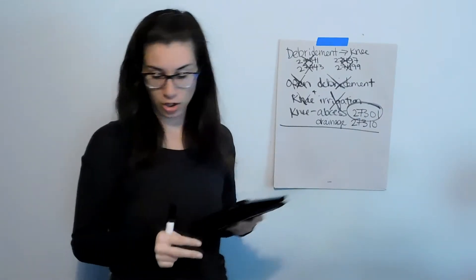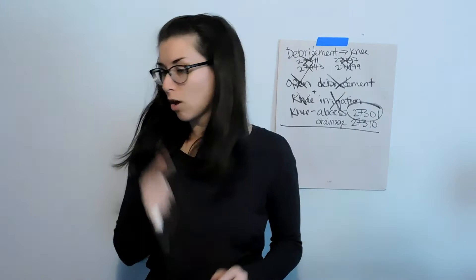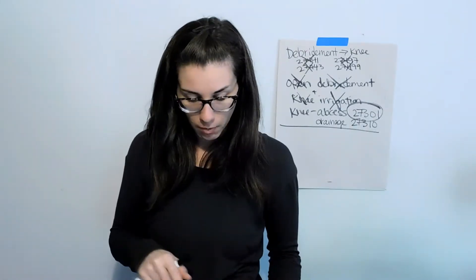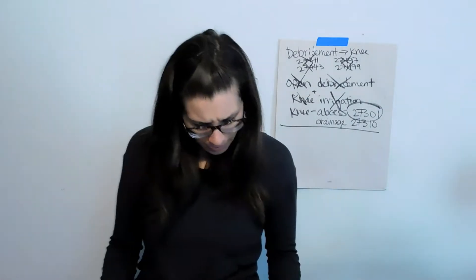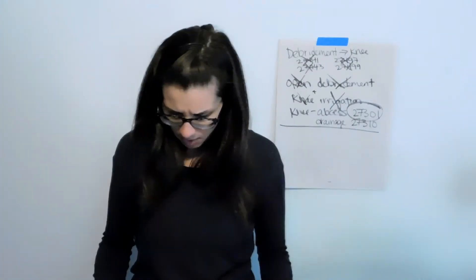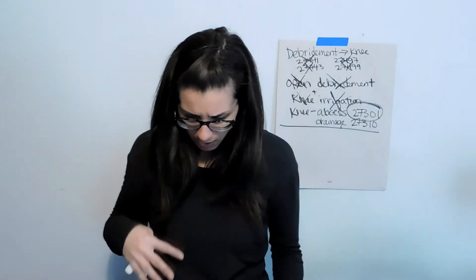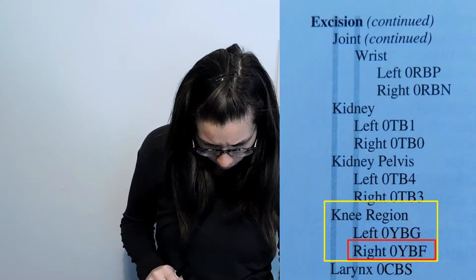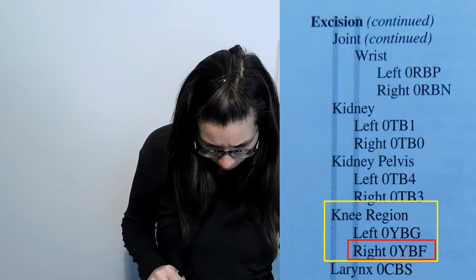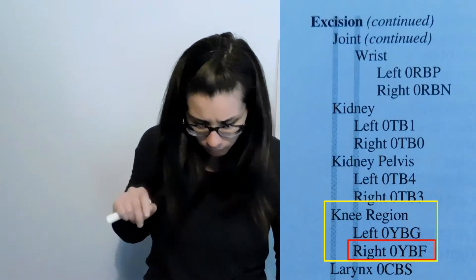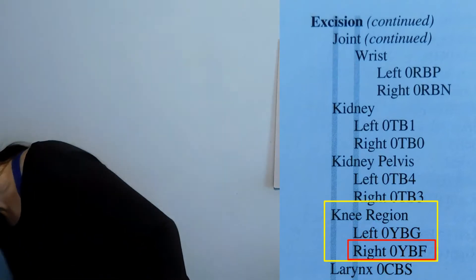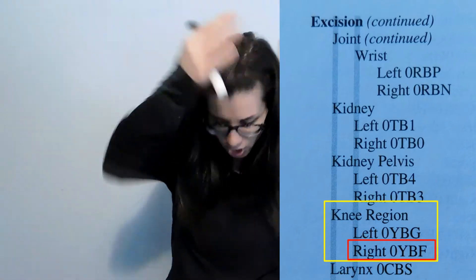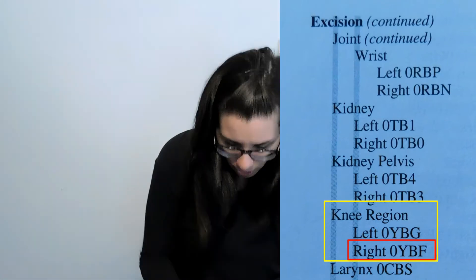Pyogenic granuloma — that's excision. So we know it's going to be excision, we want to go to E, excision. We know it's in the knee — for sure in the knee, not just the skin, in the knee. Knee region, left or right? That one said right knee. Right knee — excision, knee region, right knee: O, Y, B, F.